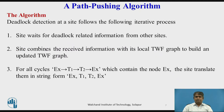Deadlock detection at a site follows the following iterative process. The site waits for deadlock-related information from other sites. The site combines the received information with its local transaction wait-for graph to build an updated transaction wait-for graph. It detects all cycles and breaks only those cycles which do not contain the node EX. These cycles are local to this site; all other cycles have the potential to be part of global cycles.